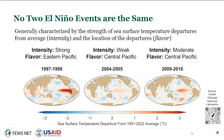No two El Niño events are the same, and they're often distinguished in terms of their relative intensity — specifically, how great those temperature departures from normal are. In the examples here, the El Niño event in 97–98 on the left shows a large red area along the equatorial Pacific representing a strong El Niño, whereas the one in the center has a much smaller temperature anomaly signature, and the one on the right is more of a moderate event. Climate scientists also distinguish among El Niño events in terms of where that temperature anomaly occurs — they call that the 'flavor' — whether it's happening in the eastern or central Pacific, which makes a difference in terms of impacts around the world.